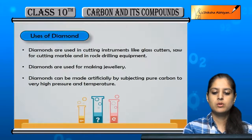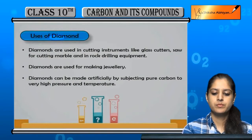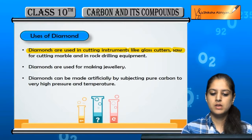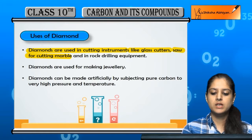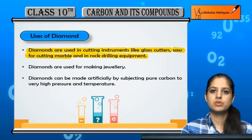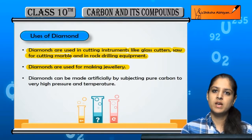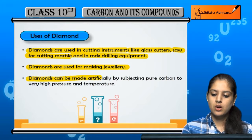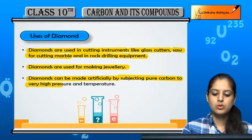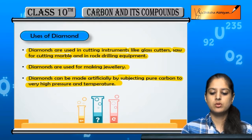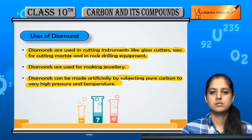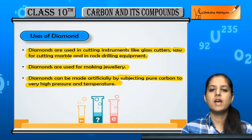Some uses of diamond: we use diamond for cutting, like glass cutters and for cutting marble. We also use rock drilling equipment with diamonds. Diamonds are used for jewelry as well. Diamonds can also be made artificially by subjecting pure carbon to very high pressure and temperature — this way we can produce artificial diamonds.